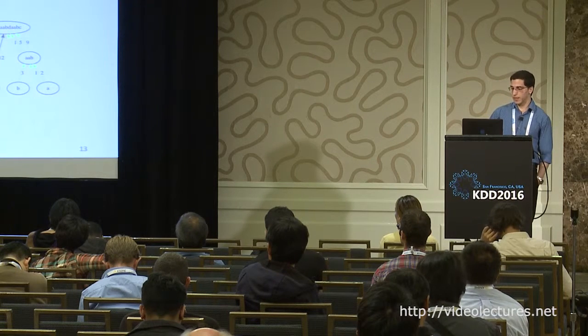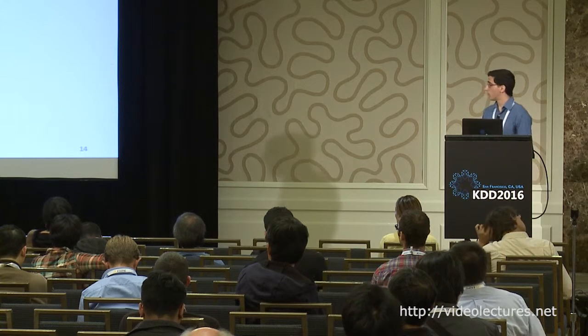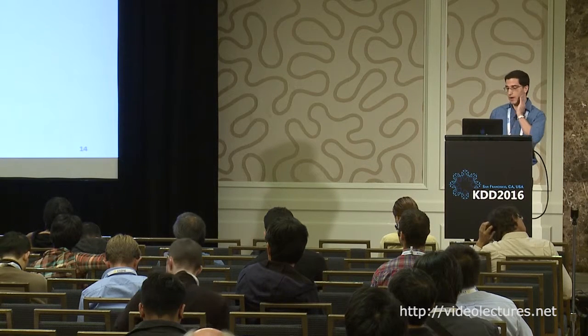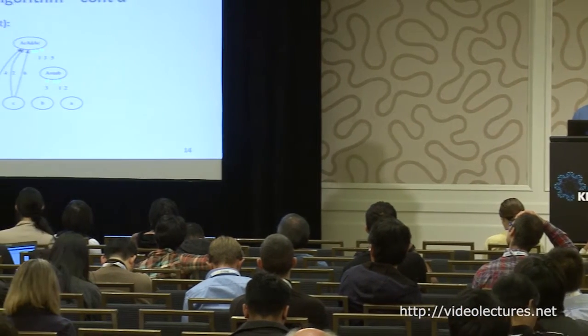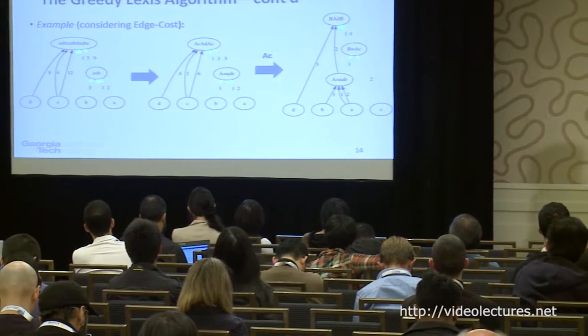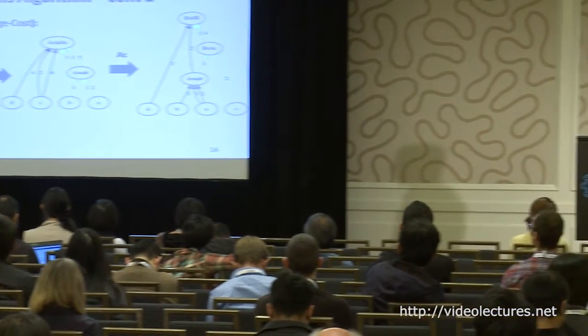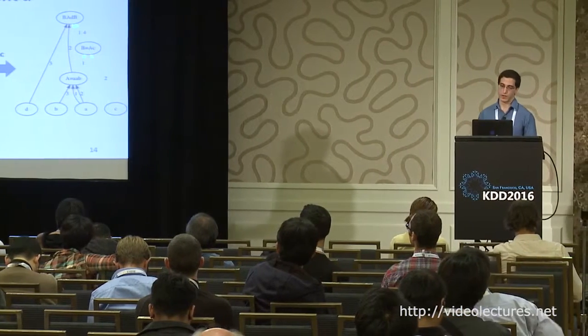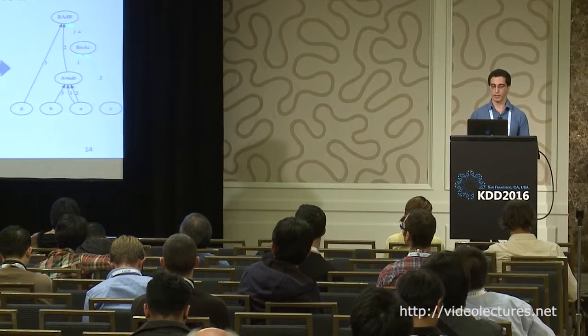Going further, we treat the AAB substring now added as a new symbol and extend our alphabet, using this symbol in the process of detecting further repeats. In the next stage, we detect such a repeat with the new symbol, which helps us further optimize the cost function. This is the final hierarchy we end up with.